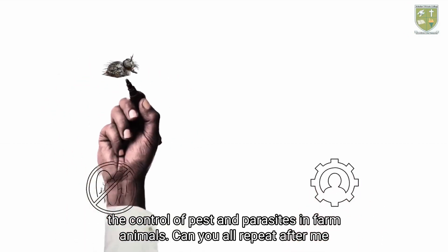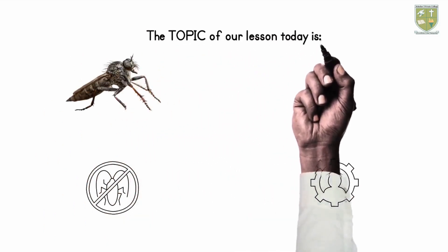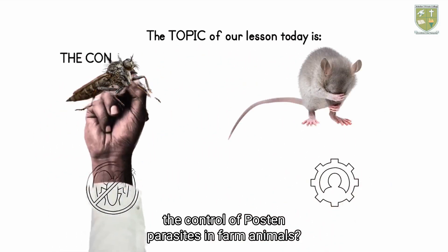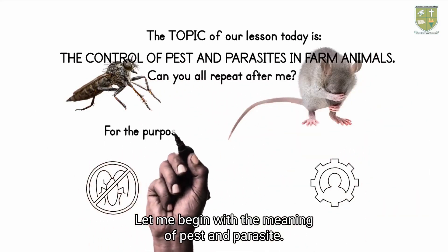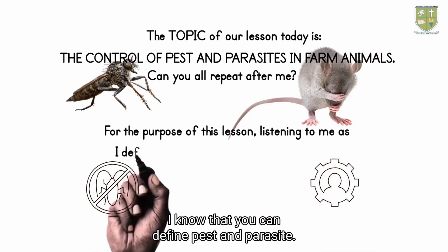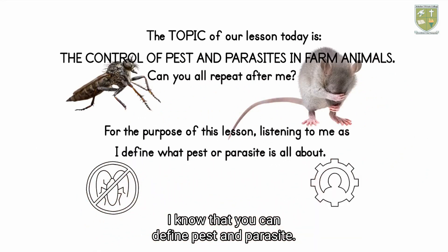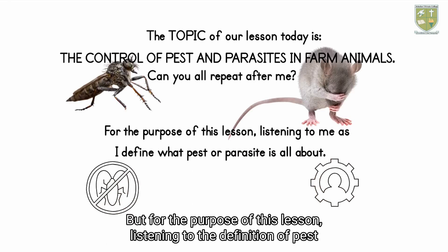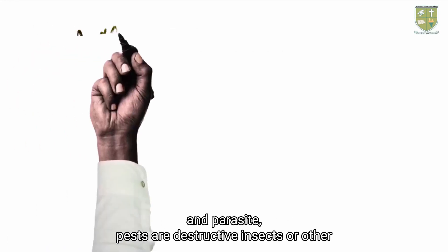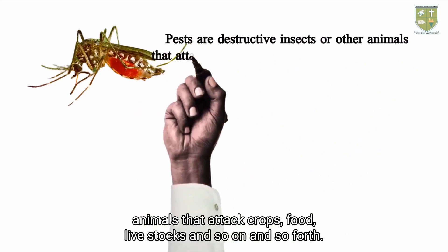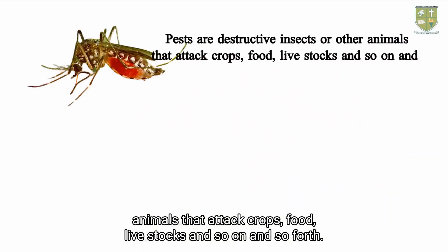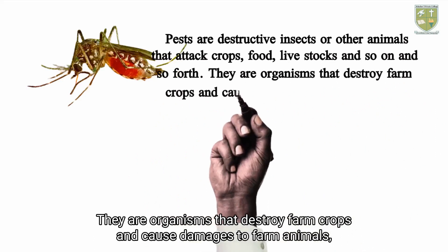The control of pest and parasites in farm animals. Let me begin with the meaning of pest and parasite. Pests are destructive insects or other animals that attack crops, food, livestock, and so on. They are organisms that destroy farm crops and cause damages to farm animals.